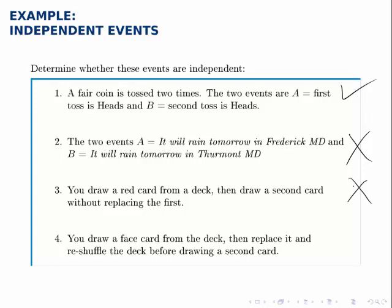In the fourth one, if I draw a face card and then replace it and reshuffle the deck before drawing a second card, that makes the two events independent. Because by replacing the card and reshuffling it, I have returned all the probabilities back to where they were. In other words, the deck looks the same as it did before I drew the first card. There are still 52 total cards and all the cards are back in the deck. Those events are independent.